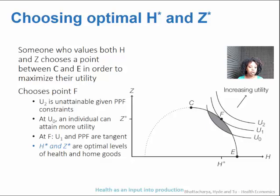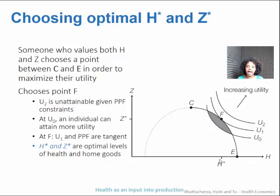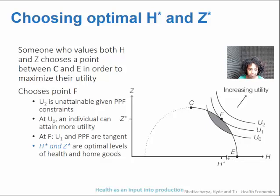Just like the traditional production possibilities curve, the outer bound of this semicircle traces what is possible. Whether you prefer health or fun, you're going to want to maximize your utility and allocate it between one or the other. Either way, you're going to want to pick a point along the outside of this curve, otherwise you're leaving utility on the table — and nobody wants to do that.